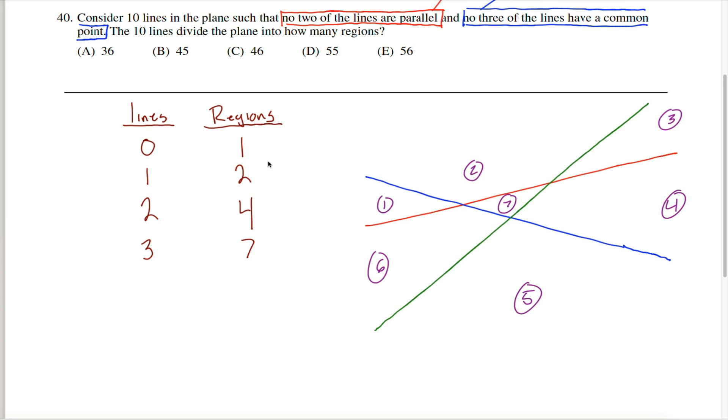And if you do that, you might recognize that when we added our first line, we increased the number of regions by one. And when we added our second line, we increased the number of regions by two. And just now, when we added our third line, we increased the number of regions by three. It sure looks like when we add our fourth line, we're going to increase the number of regions by four and have a total of 11 regions.